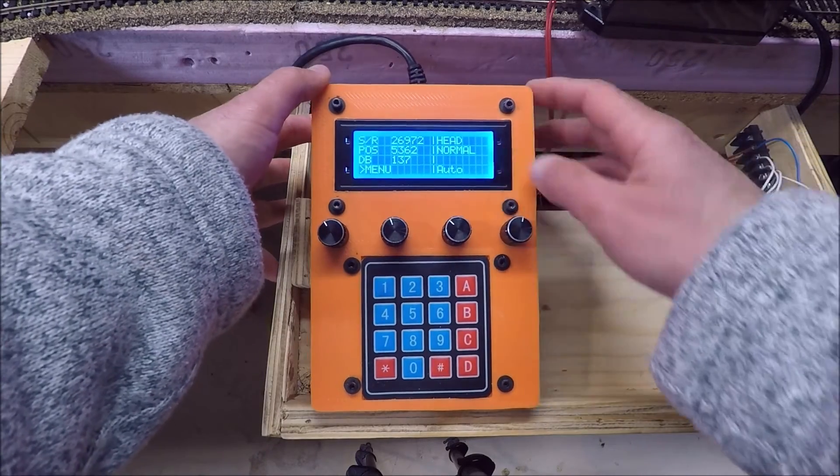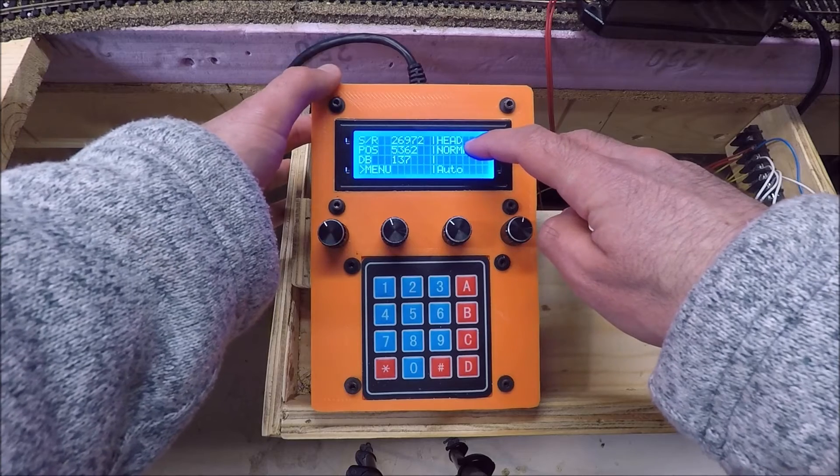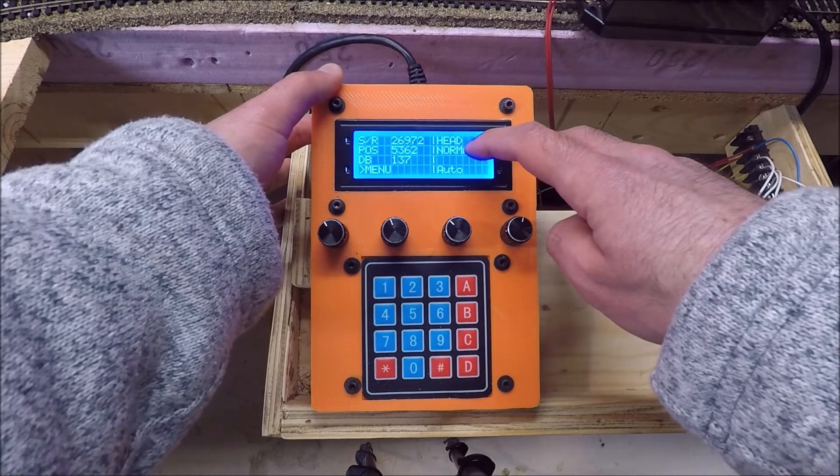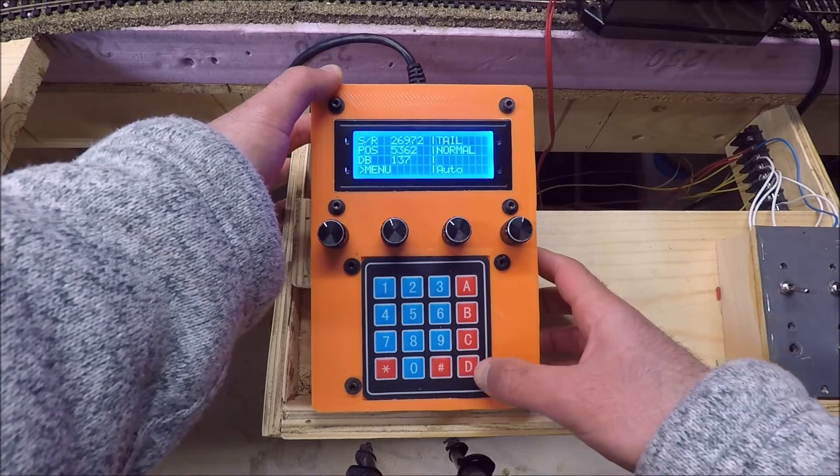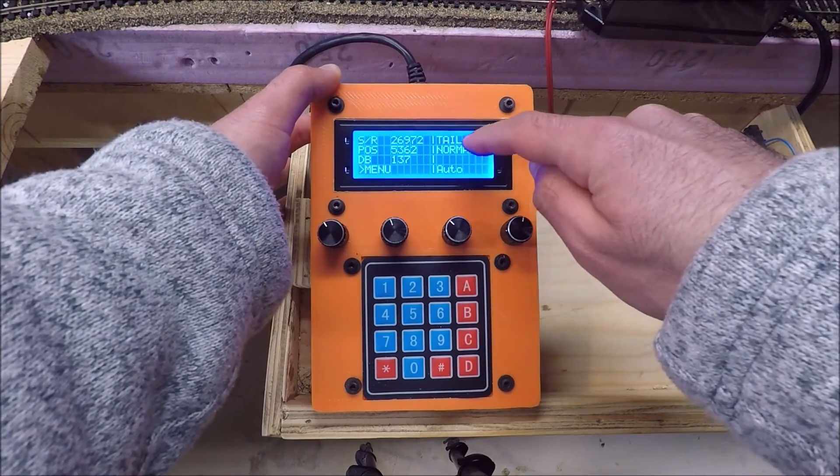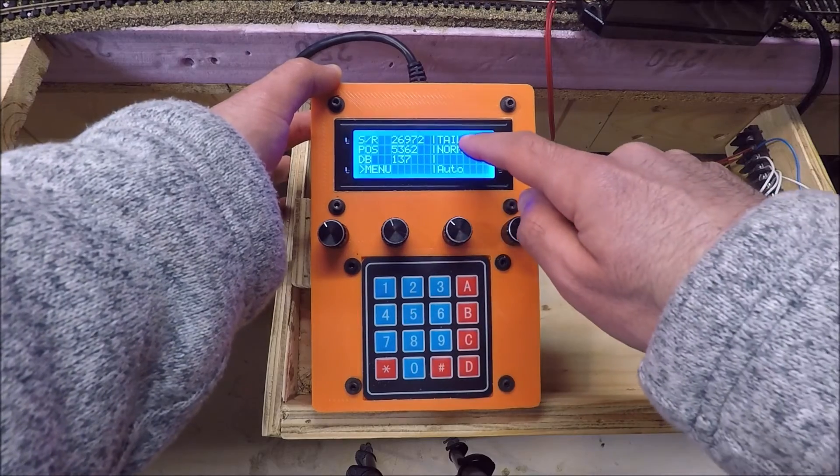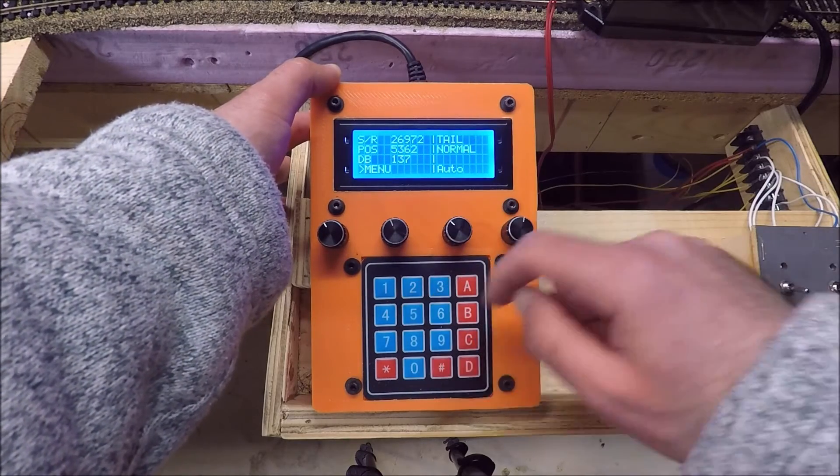Over here you can see it says head. That means if you move anything in automatic mode it'll move the head to wherever you tell it to move. You can change that by pressing the D. And then it says tail. So now if you press any of these buttons it'll automatically move the tail position to the indicated location.